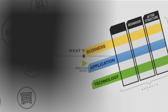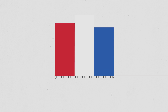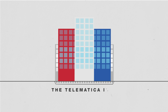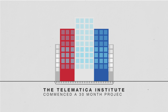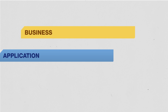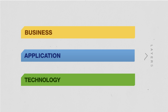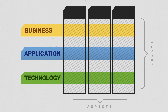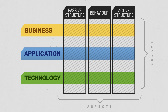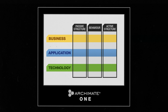To get a full picture, let's travel back to 2002. This was the year in which a Netherlands-based consortium, the Telematica Institute, commenced a 30-month project to define a visual language that could represent complex structures in terms of business processes, applications, and technology. This consortium came up with a core language that had three different aspects: the active structure, or the who; the behaviour aspect, the how; and the passive structure, or the what. This was Archimate 1.